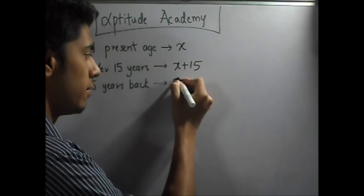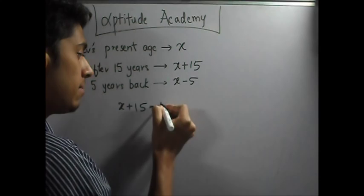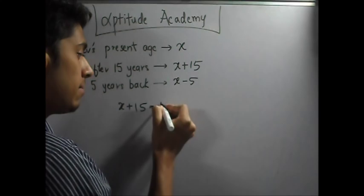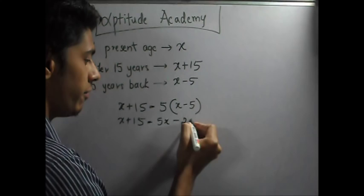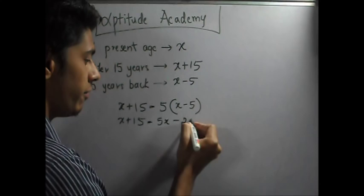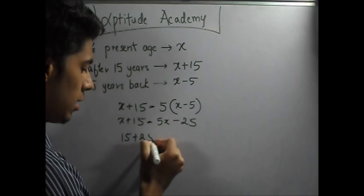x plus 15 is equal to 5 times (x minus 5). So x plus 15 equals 5x minus 25. Take x to one side: 15 plus 25 equals 5x minus x, so that's 4x. This gives us 40 equals 4x, which implies x equals 40 divided by 4.